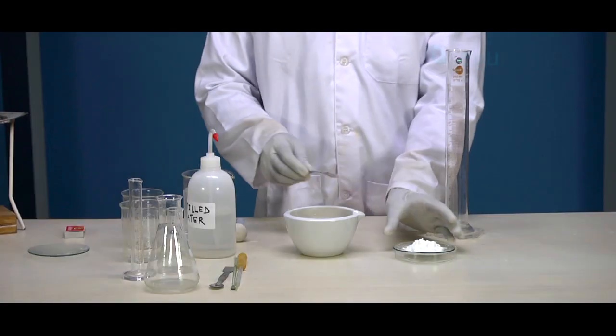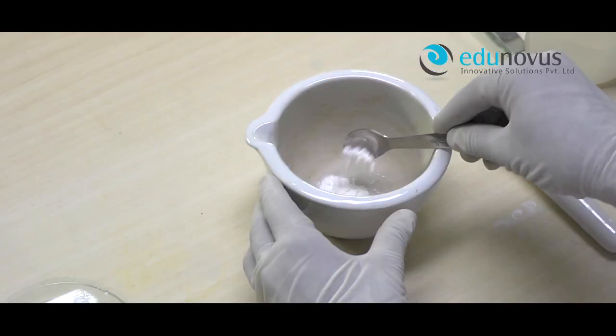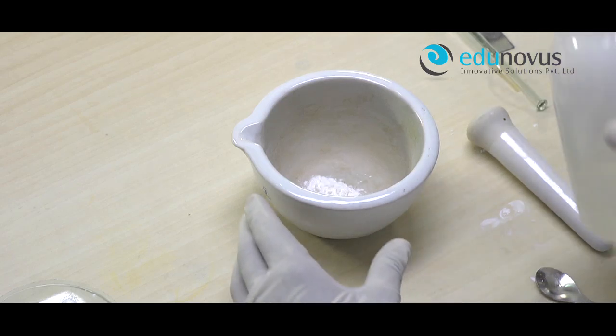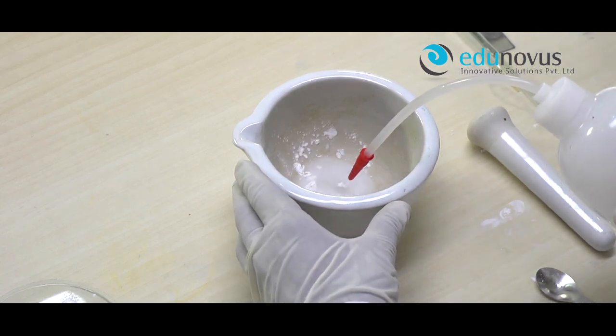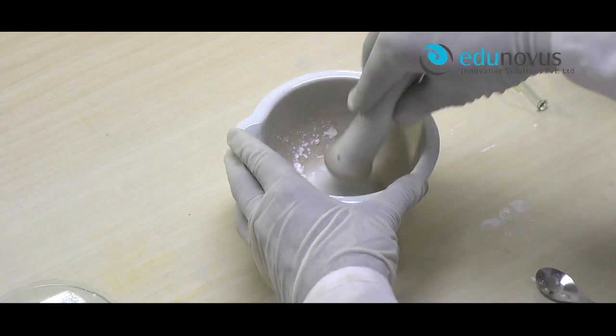Let us go through the step-by-step procedure to prepare starch solution. First, take a small amount of starch in a mortar and then add a few ml of distilled water. Now grind the starch until a thin paste is formed.